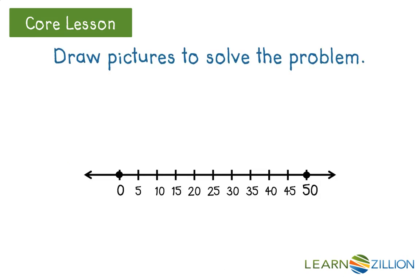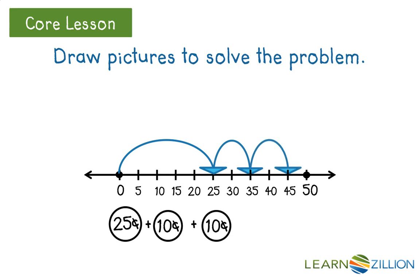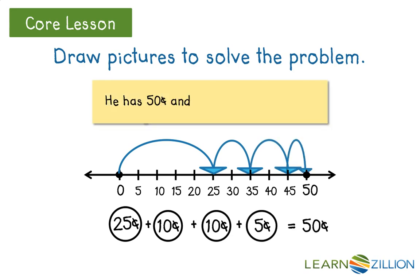Let's draw pictures to solve the problem. We'll skip count that quarter first. Now we can skip count by 10 starting at 25: 35, 45, plus that nickel gets us to 50 cents. He has 50 cents and can buy lemonade. 50 cents is greater than 45 cents.